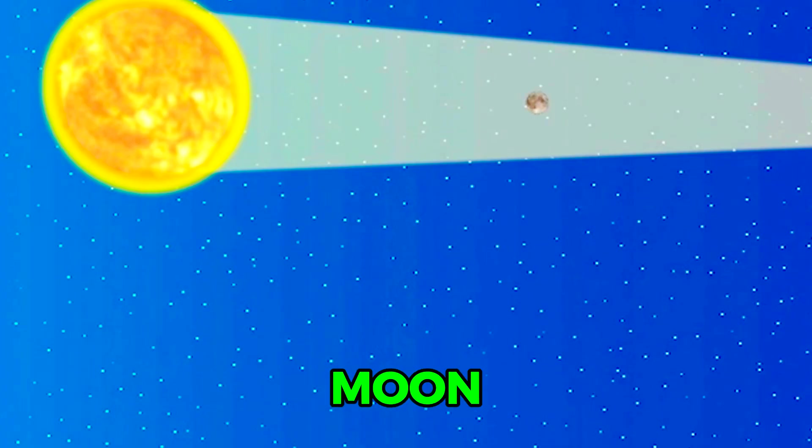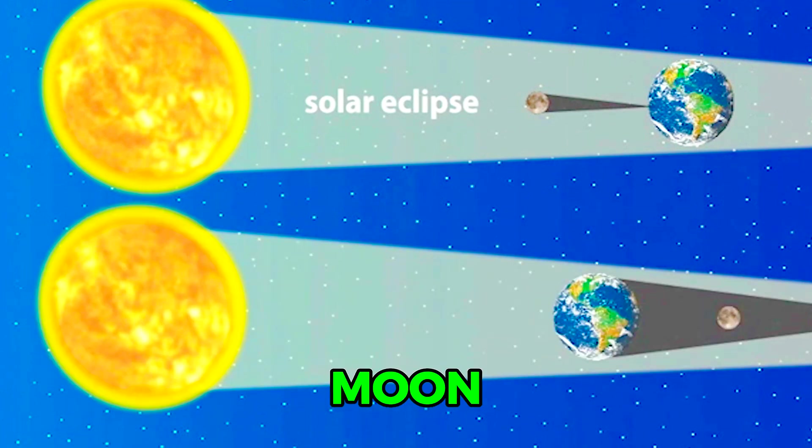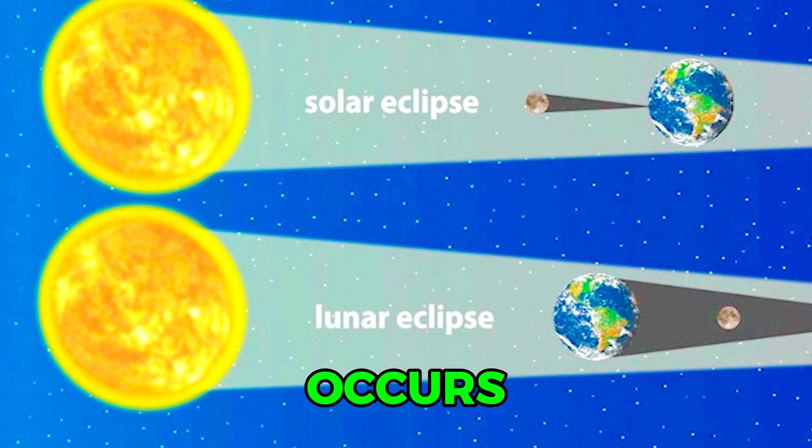When the Moon's shadow hits the Earth, a solar eclipse occurs. When the Earth's shadow hits the Moon, a lunar eclipse occurs.